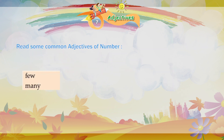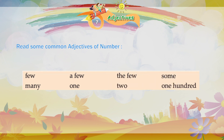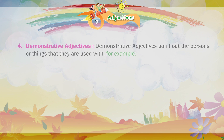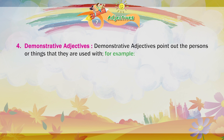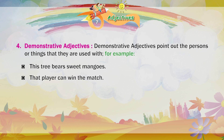Read some common adjectives of number: few, many, a few, one, the few, two, some, one hundred. Demonstrative adjectives point out the persons or things that they are used with. For example: This tree bears sweet mangoes. That player can win the match. These shirts are very comfortable.